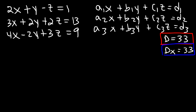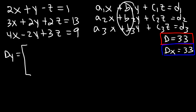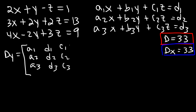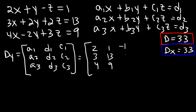Now let's focus on dy. This time, the coefficients in front of y are replaced with d1, d2, and d3. So it's going to be a1, a2, a3, and then d1, d2, d3, and then c1, c2, c3. So this corresponds to the numbers 2, 3, 4 — then 1, 13, 9 — and negative 1, 2, and 3.